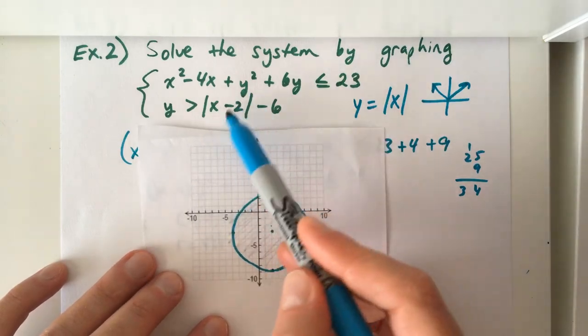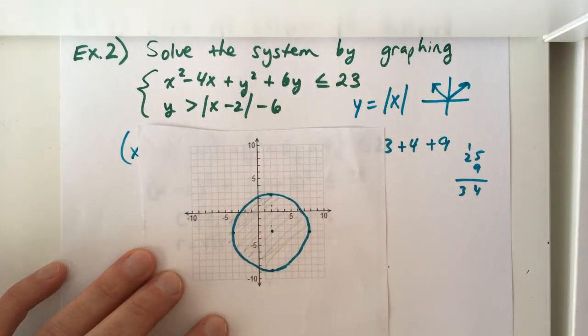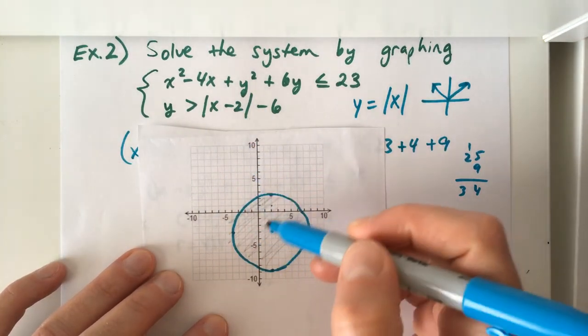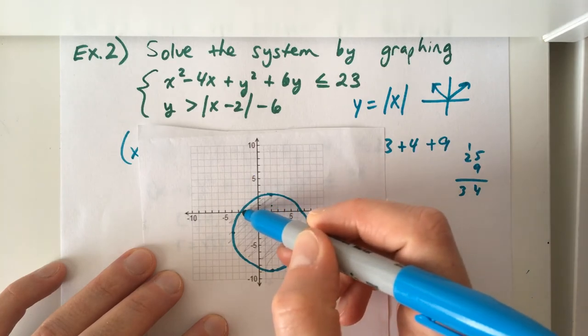And then thinking about transformations, that minus 2 within the function shifts it to the left 2 from the origin. And the minus 6 will shift it down 6.